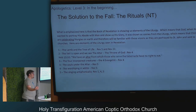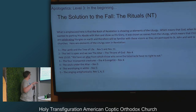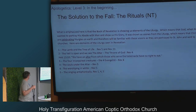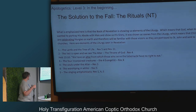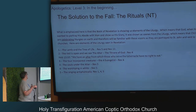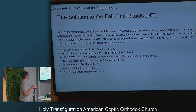Here are all the elements of the liturgy seen in Revelation: the Lamb and the tree of life in Revelation 5 and 22; the veil is open and we see the altar, which is the throne of God, in Revelation 4; the four incorporeal creatures and four evangelists in Revelation 4; the souls under the altar in Revelation 5; worshiping in white in Revelation 5; and singing antiphonically in Revelation 1, 4, and 5.